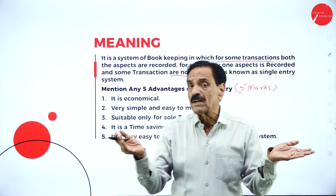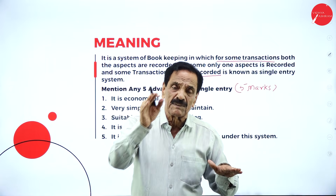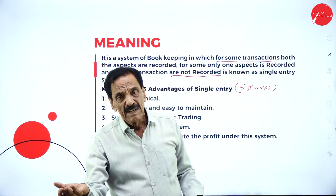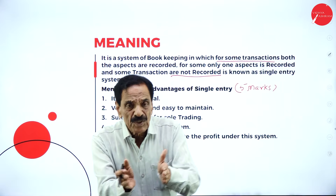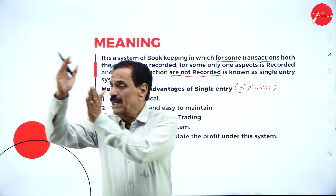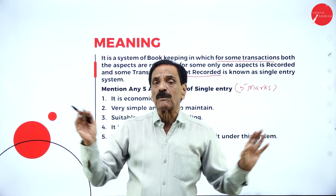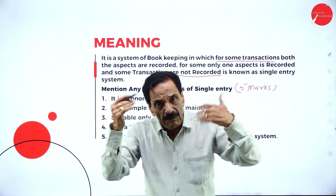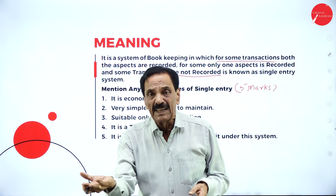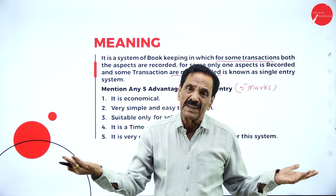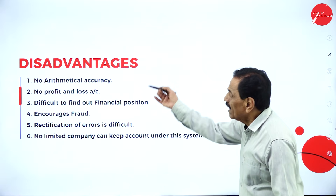For example, if you start with 1 lakh and end with 1 lakh 50 thousand, you earned a profit of 50 thousand during the year. Out of 50 thousand, if expenditure is 30 thousand, the net profit in hand becomes 20 thousand. So it is very easy to calculate profit under the single entry system.